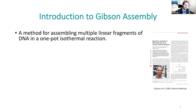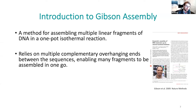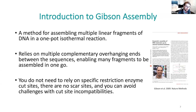Gibson assembly is a method for assembling multiple linear fragments of DNA in a one-pot isothermal reaction. It was developed in the late 2000s. It relies on complementary overhangs at the ends of each sequence, enabling multiple fragments to be assembled in one go. It's really handy because you don't have to rely on specific restriction enzyme cut sites, you don't have to worry about scar sites, and you can avoid challenges with cut site incompatibilities.